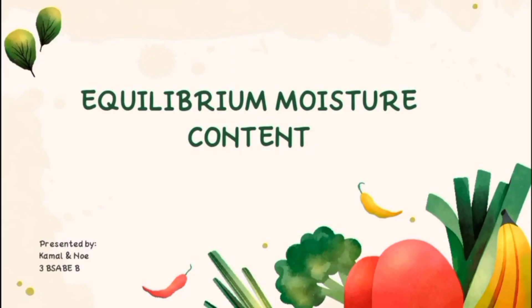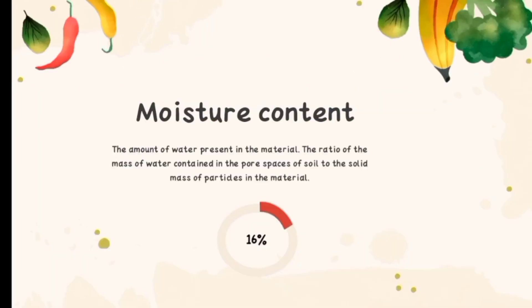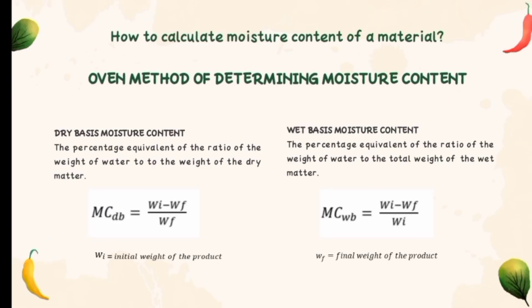Hello everyone. In this video we will discuss the equilibrium moisture content. First, let's define what is moisture content. Moisture content is the amount of water present in the material — the ratio of the mass of water contained in the pore spaces of soil to the solid mass of particles in the material.